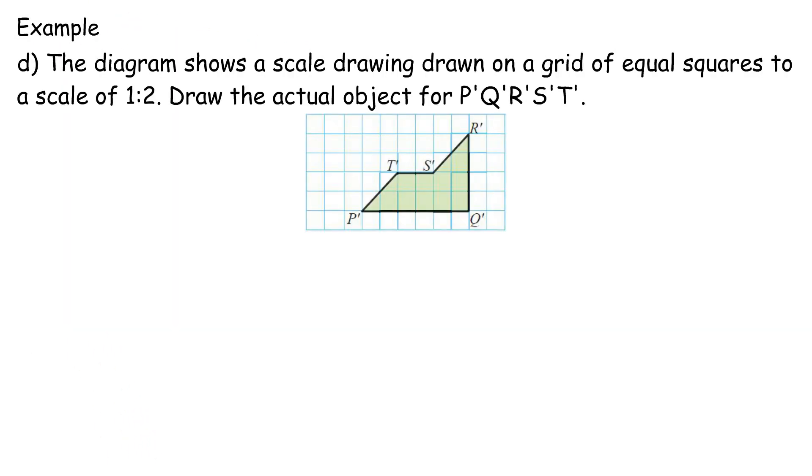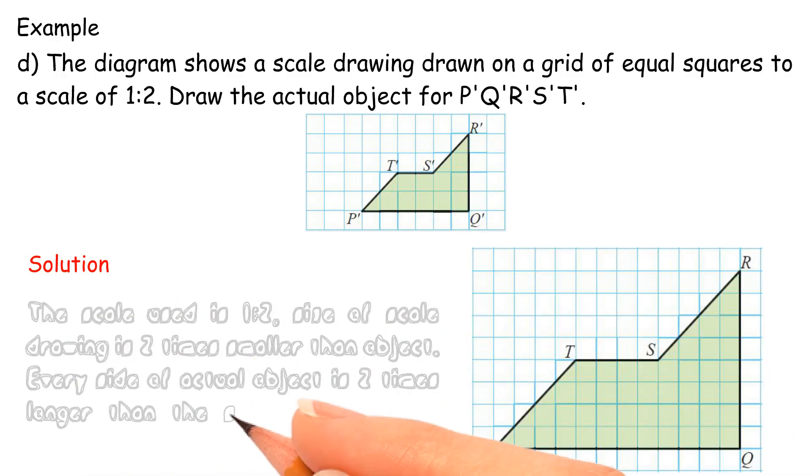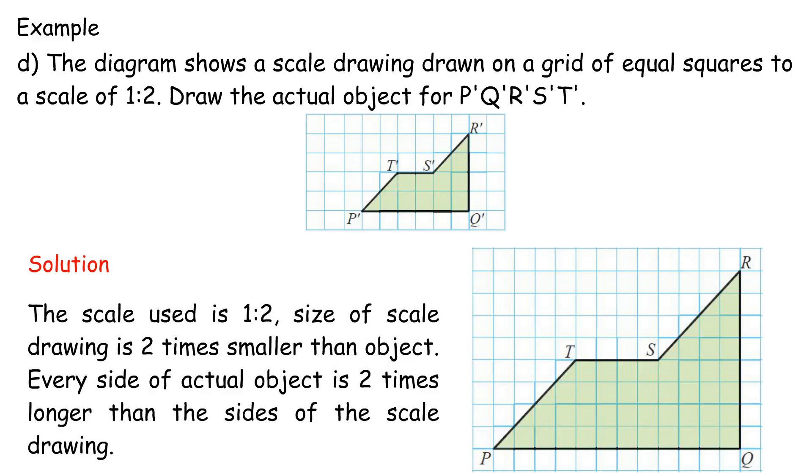Example D: The diagram shows a scale drawing drawn on a grid of equal squares to a scale of 1 is to 2. Draw the actual object for P'Q'R'S'T'. The scale used is 1 is to 2. Size of scale drawing is 2 times smaller than object. Every side of actual object is 2 times longer than the sides of the scale drawing.